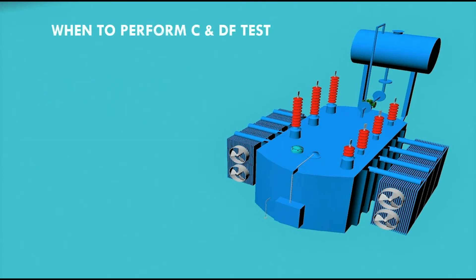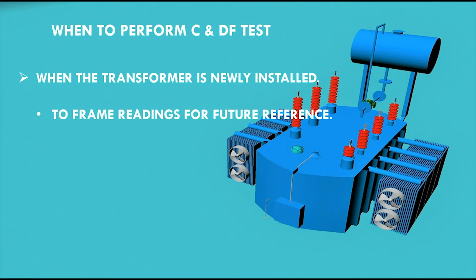When to perform C and DF test? C and DF test is performed when the transformer is newly installed. This is done to frame readings for future reference as the future values will be compared with these readings.